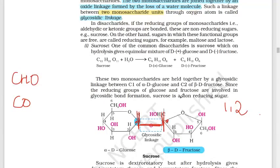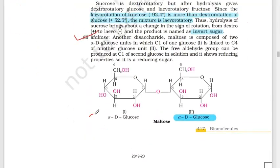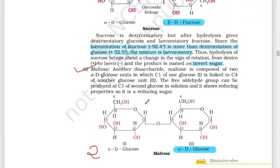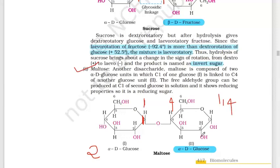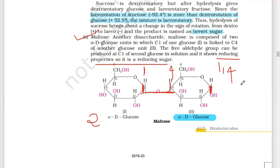Now let's move on to maltose. Maltose is a disaccharide. On hydrolysis it gives two moles of alpha-D-glucose. Looking at the linkage: the first glucose is linked at carbon one, and the second glucose at carbon four — this is a 1,4 glycosidic linkage. The aldehyde group at carbon one is free, which means maltose is a reducing sugar.